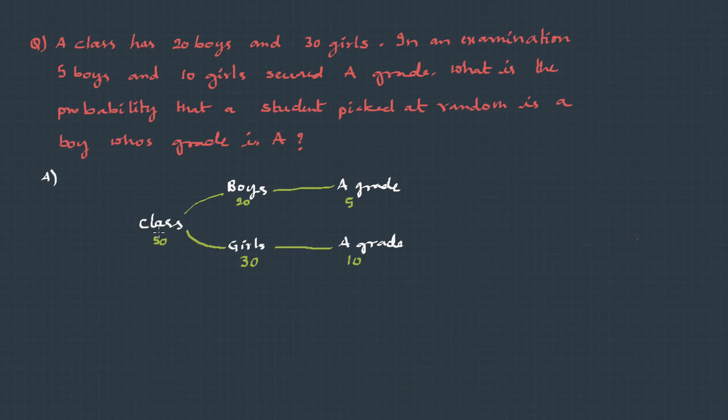With this, we can even write the probabilities. From the class we pick up a boy, the chance of getting a boy is 20 upon 50, that is 2/5. Similarly, choosing a girl is 30 upon 50, 3/5. And a boy getting an A grade is 5 upon 20, that's 1/4. And girl getting an A grade is 10 upon 30, that's 1/3.